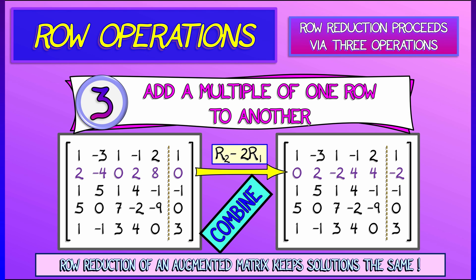So we've got three operations: switching, rescaling, and combining. And these are what we're going to use in order to reduce the augmented matrix.